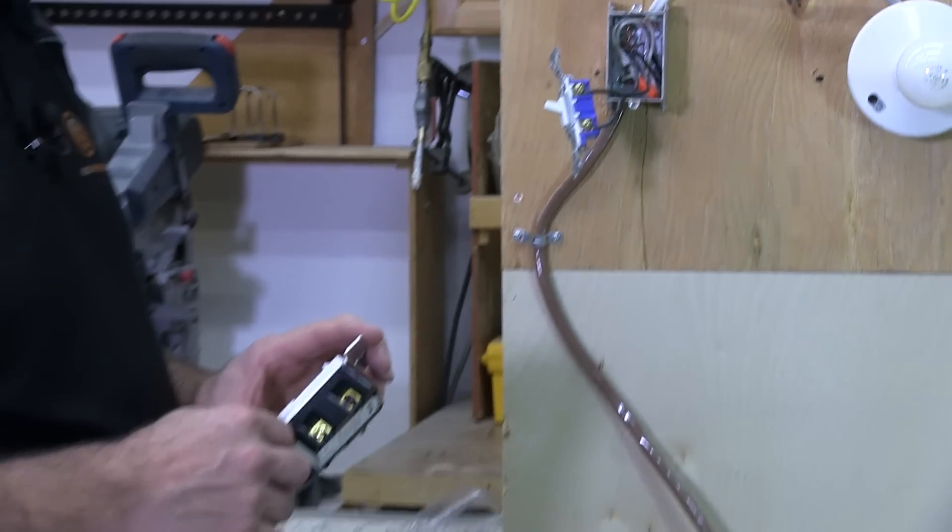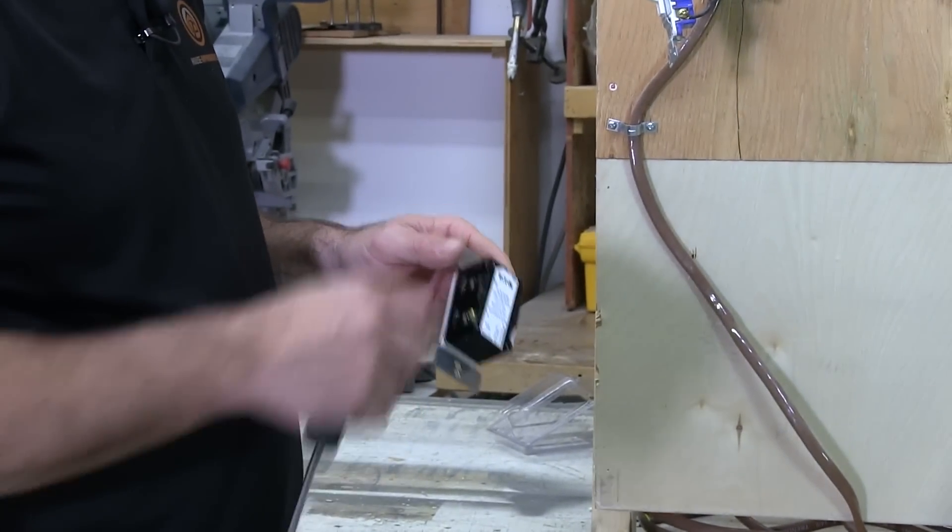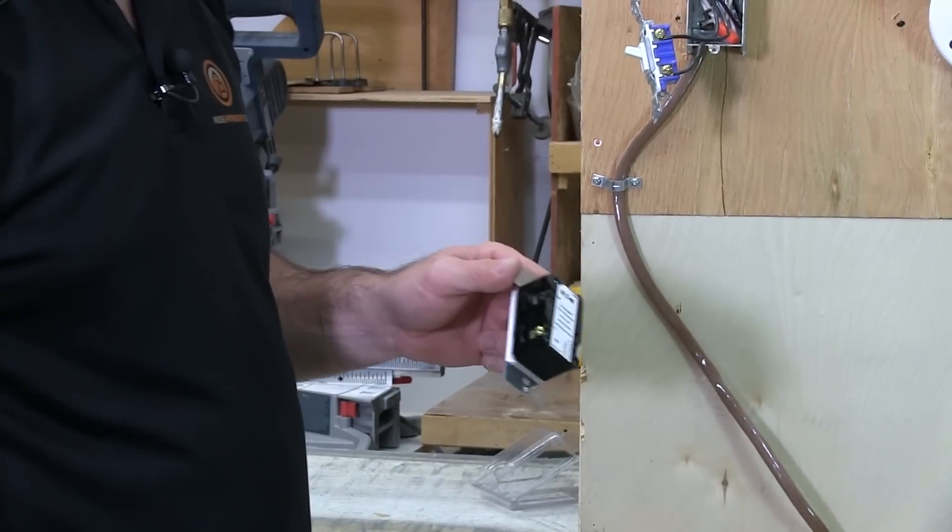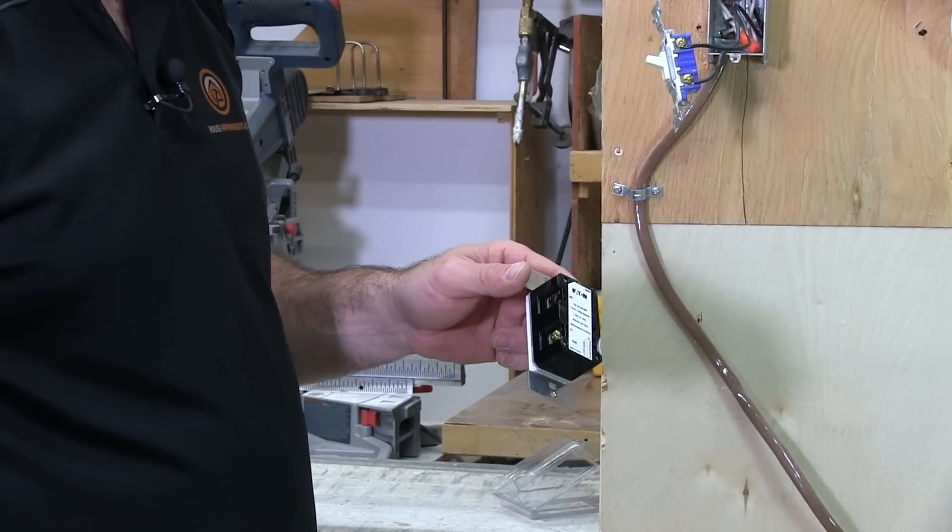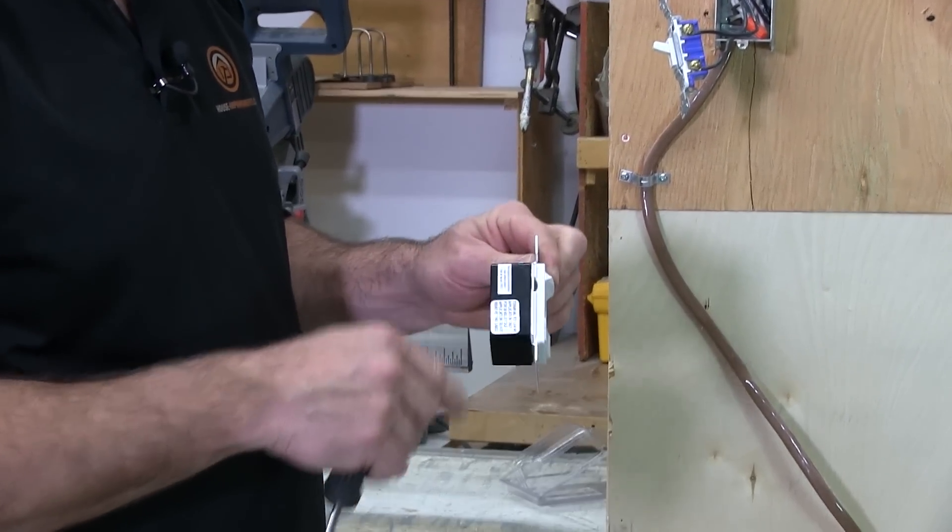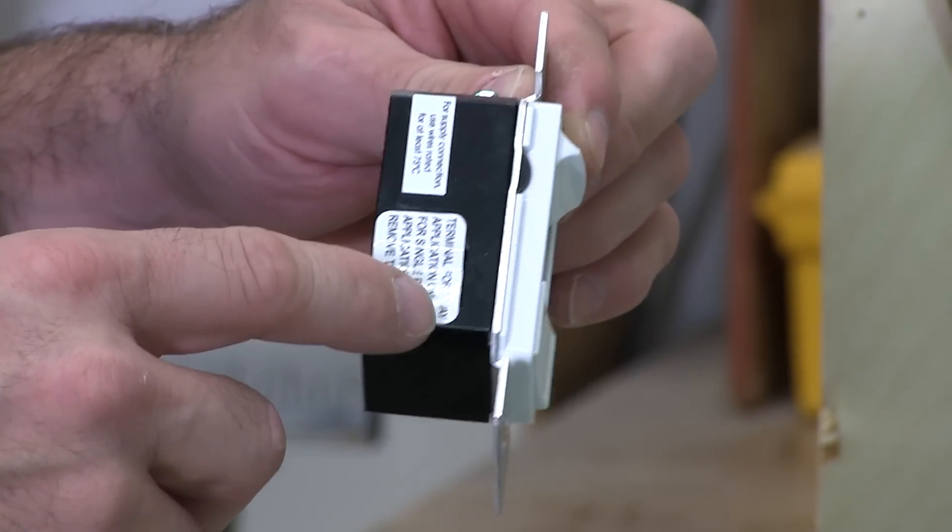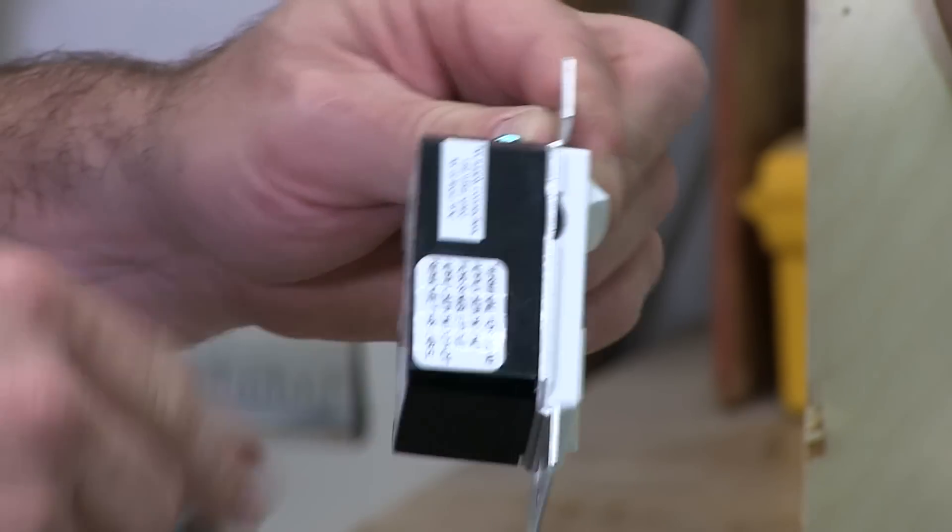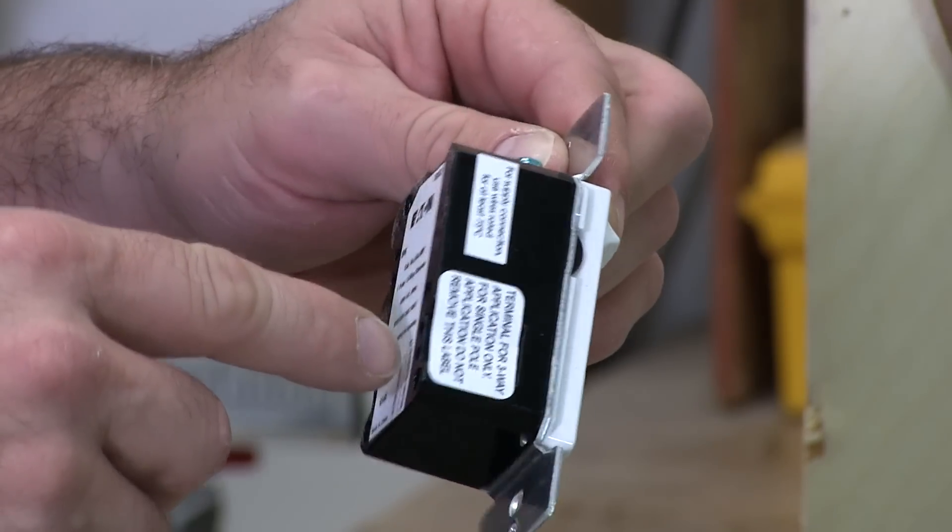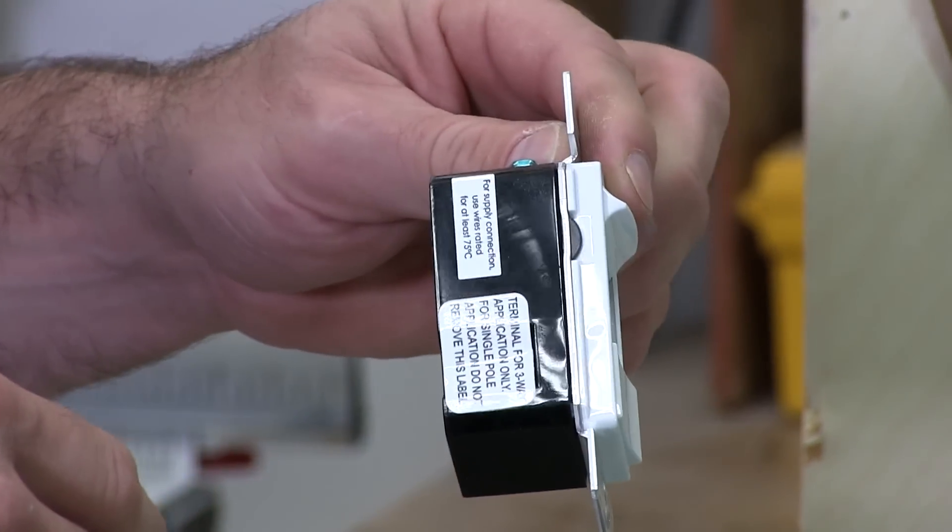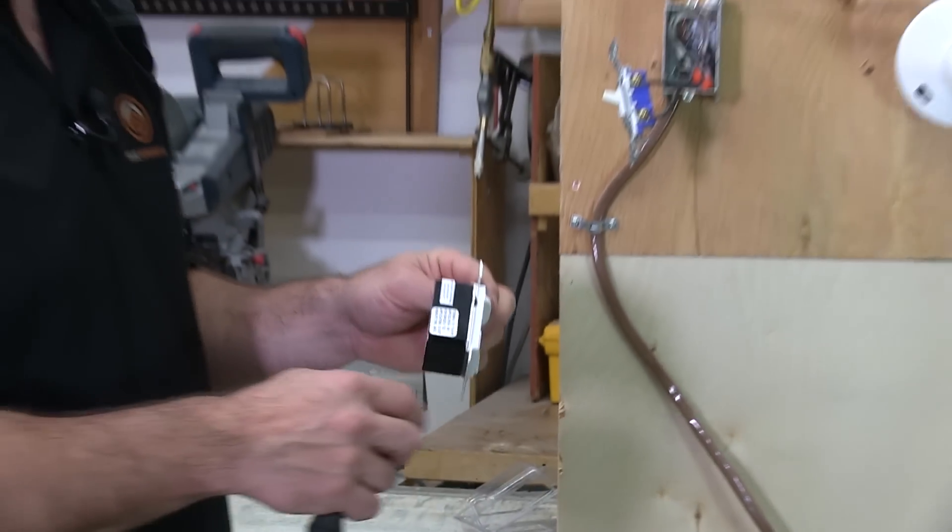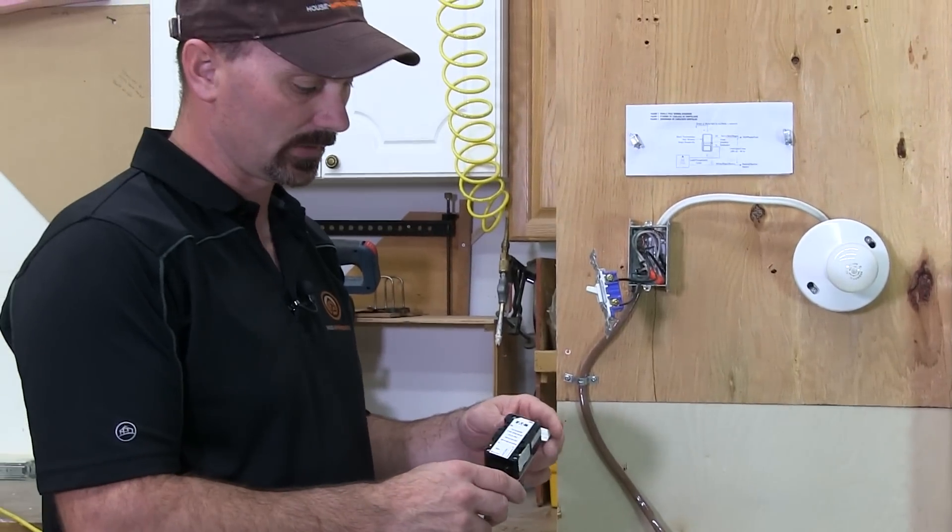In this scenario, it's actually really simple. We've got two wires there and we're going to hook it to two wires on this switch. This switch here, this particular one, is made to operate in a three-way switching scenario or a single-pole switching scenario. This sticker here is just indicating that the only time you would use the screw that's underneath it is in a three-way application and we're not doing that at all.